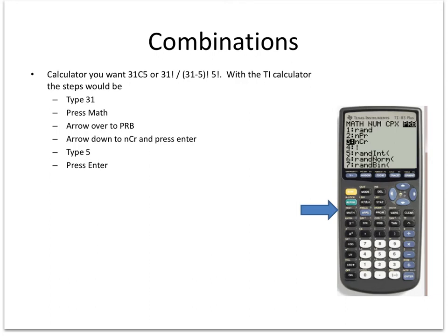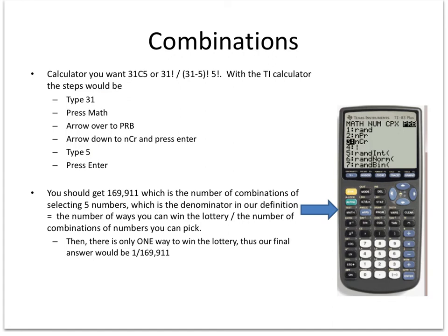On the calculator, type in the total number first, press the Math button, arrow over to probability, and arrow down to nCr. Note that nPr for permutations is right above it. Then type 5 as your r value and press Enter for the final answer. Remember: this gives you the total number of combinations; if they ask for the probability of winning, it's one over that total. Make sure you know where to find permutations, combinations, and factorials on your calculator.